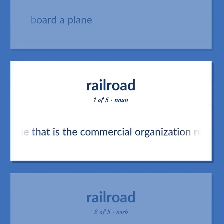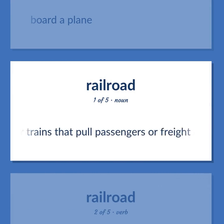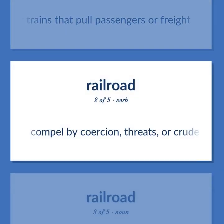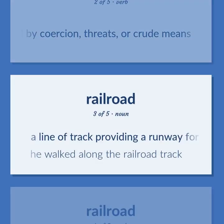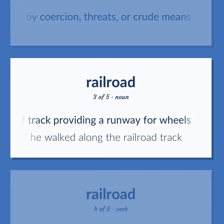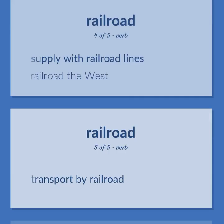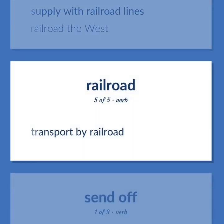Line that is the commercial organization responsible for operating a system of transportation for trains that pull passengers or freight. Compel by coercion, threats, or cruel means. A line of track providing a runway for wheels. He walked along the railroad track. Supply with railroad lines. Railroad the west. Transport by railroad.